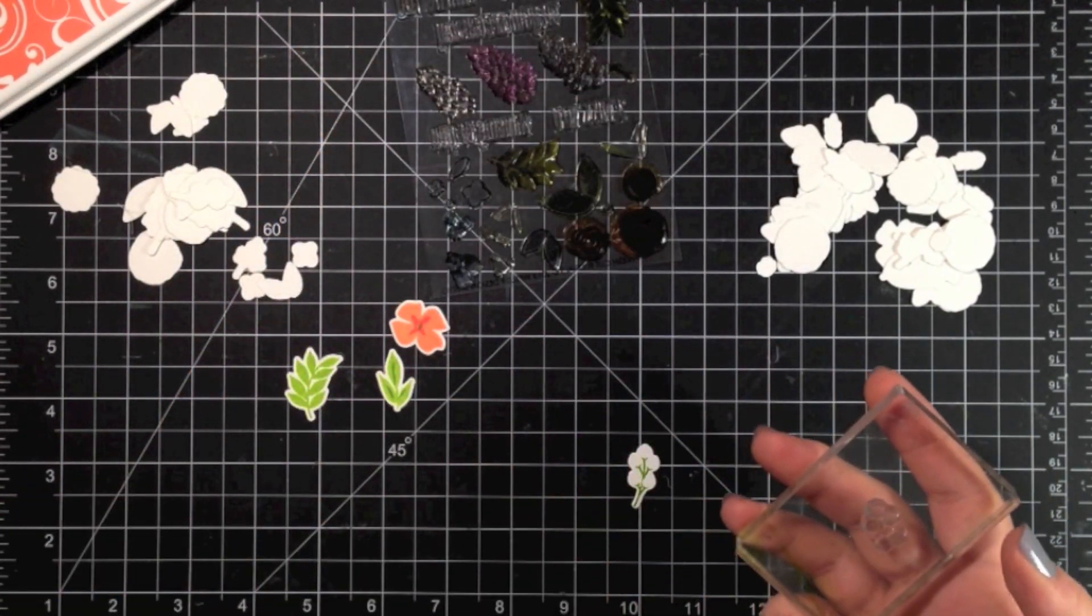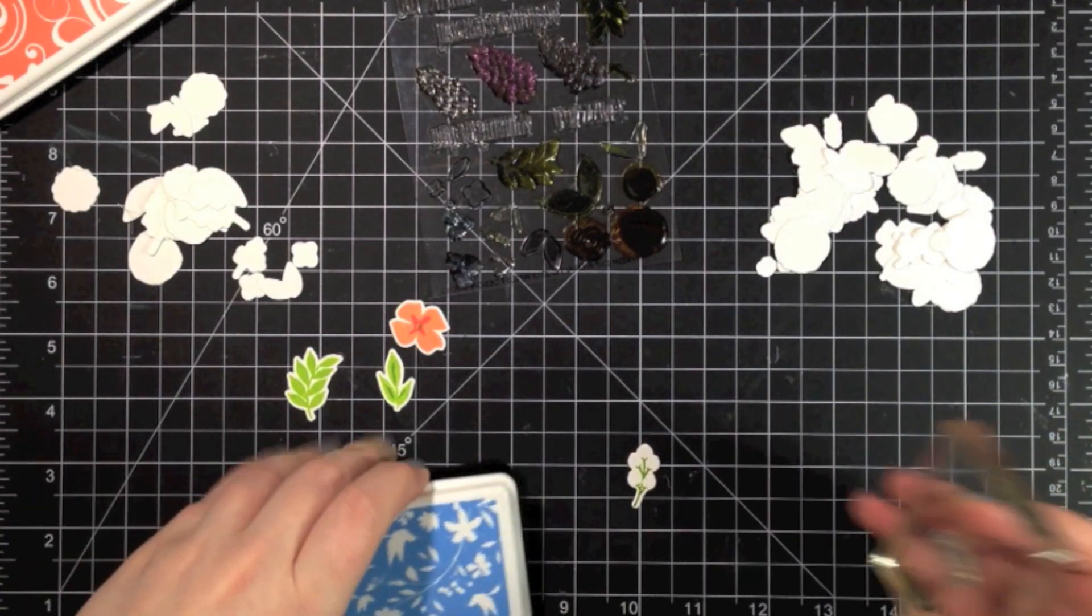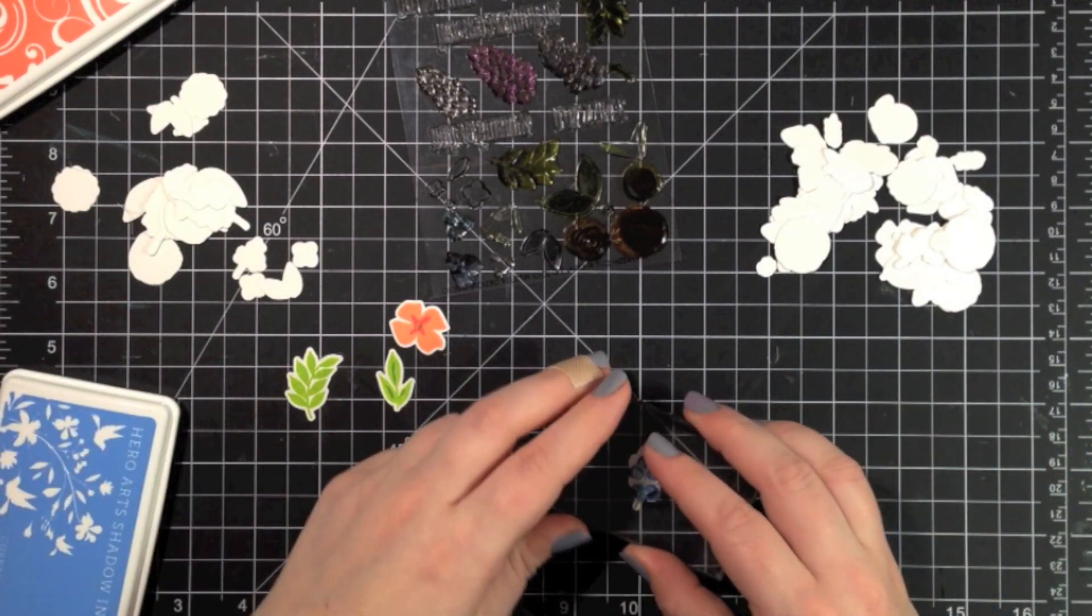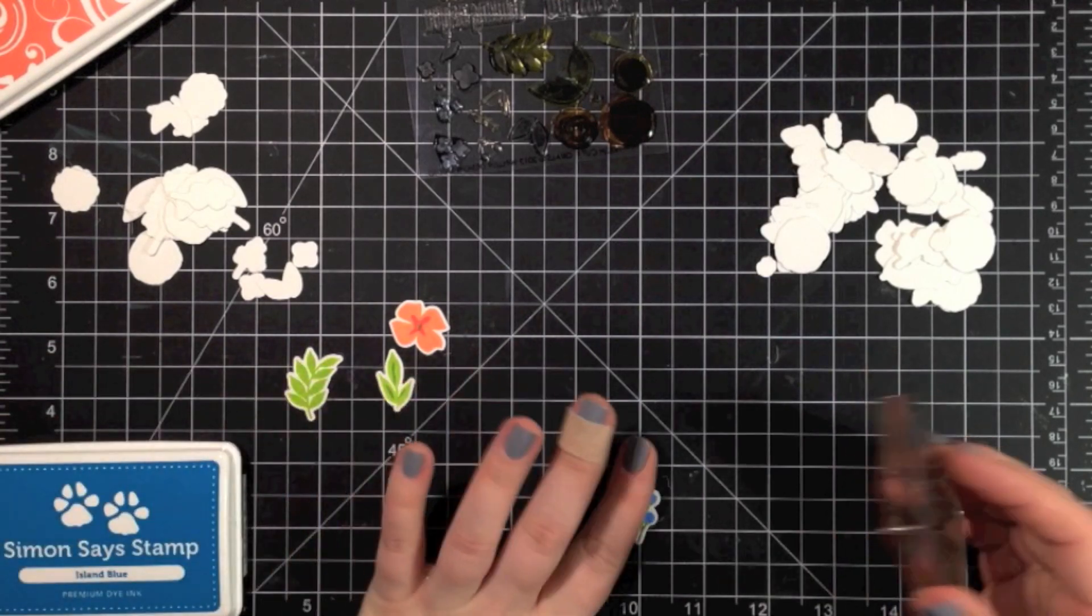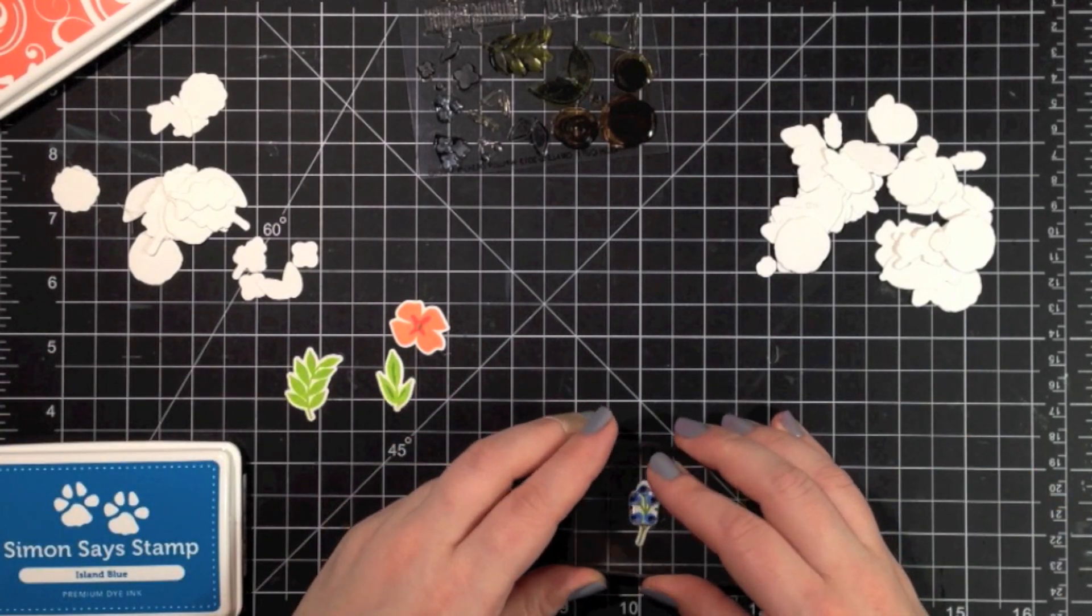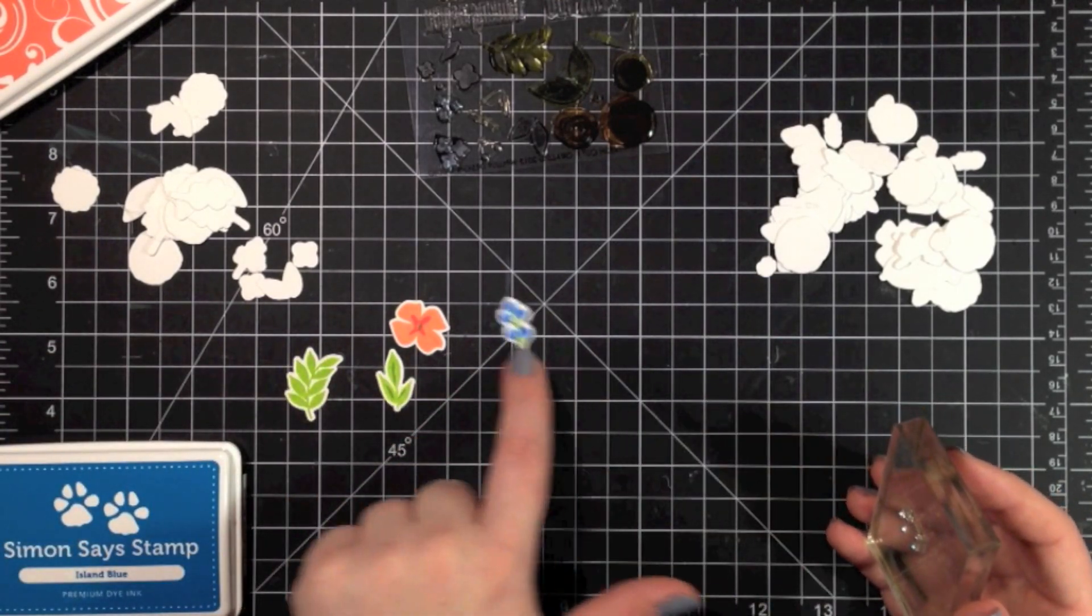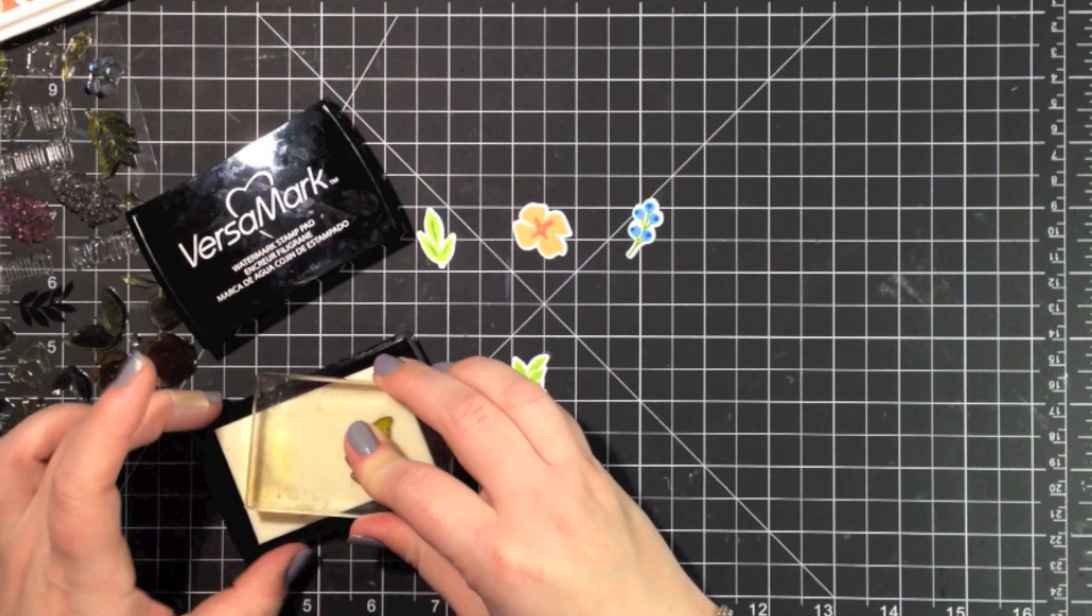And then for this last one that I'm going to show on camera here, this one is a fun one. It has the vine part first, so I went ahead and stamped that, the branch area of this. Then you have these great little ball stamps for berries, I guess, and then some smaller circles that go on the top of those. So I did those in some fun blue inks.